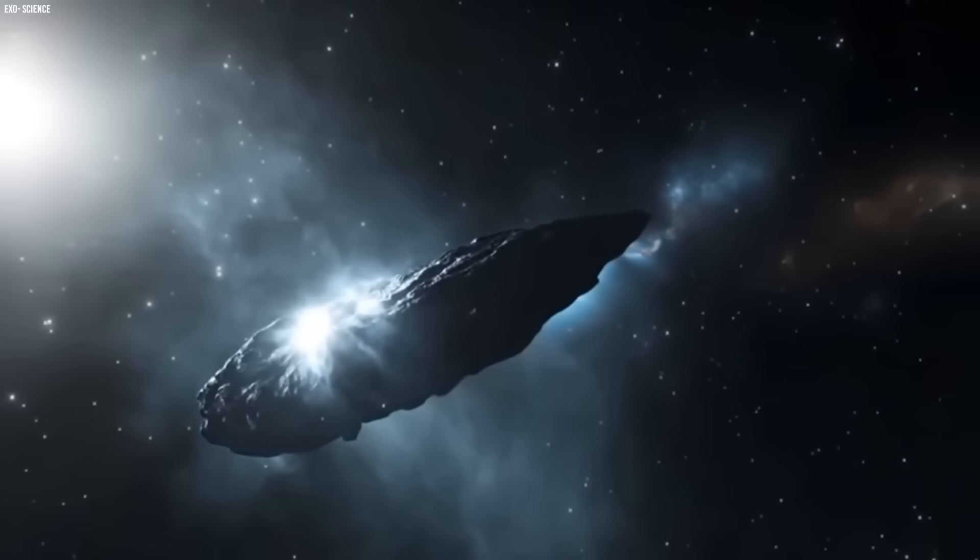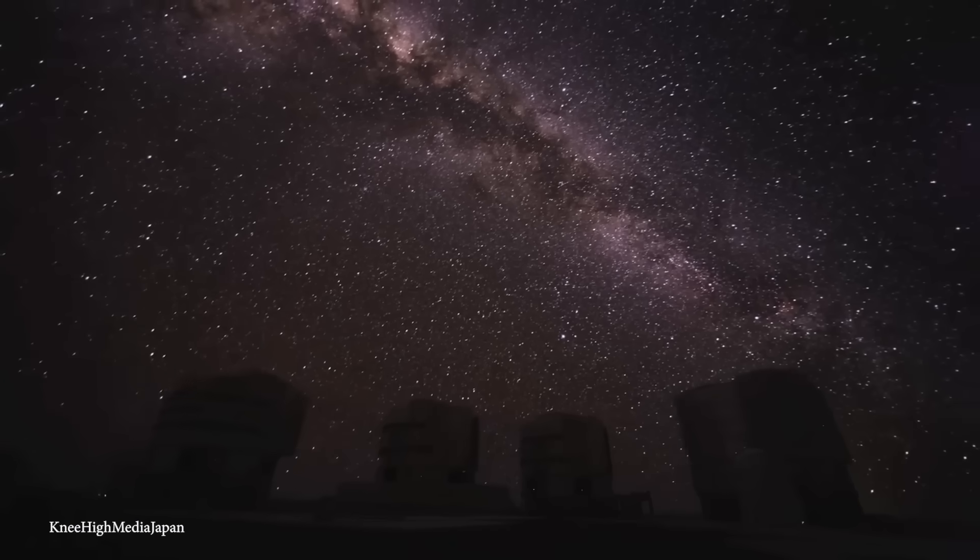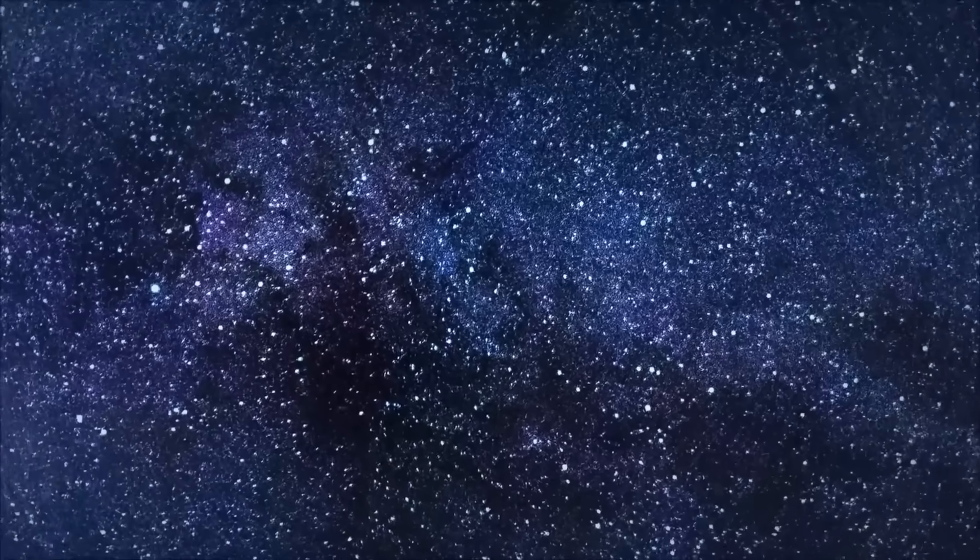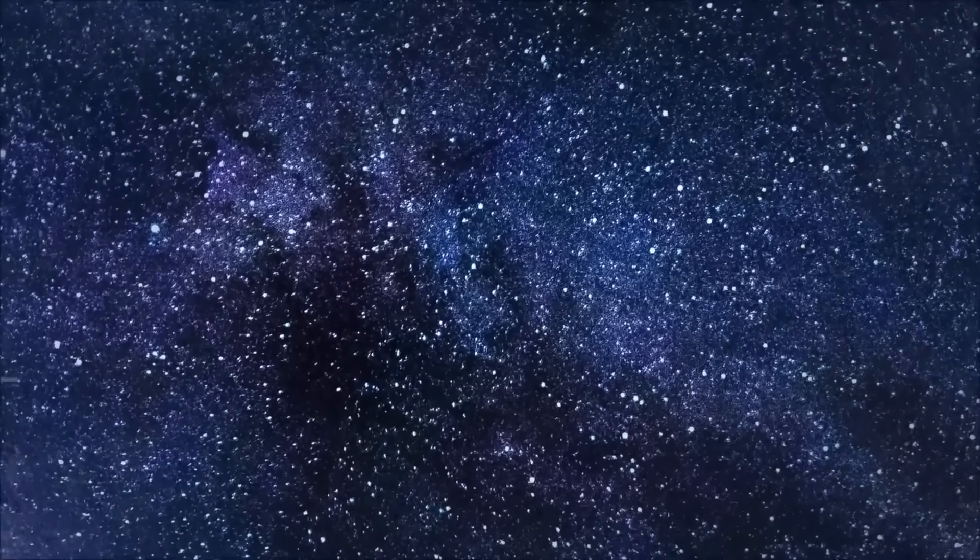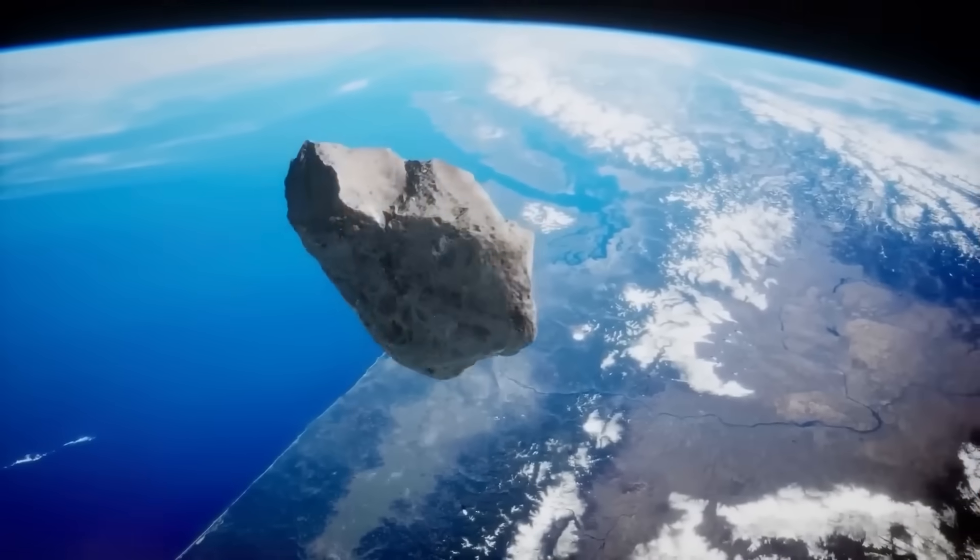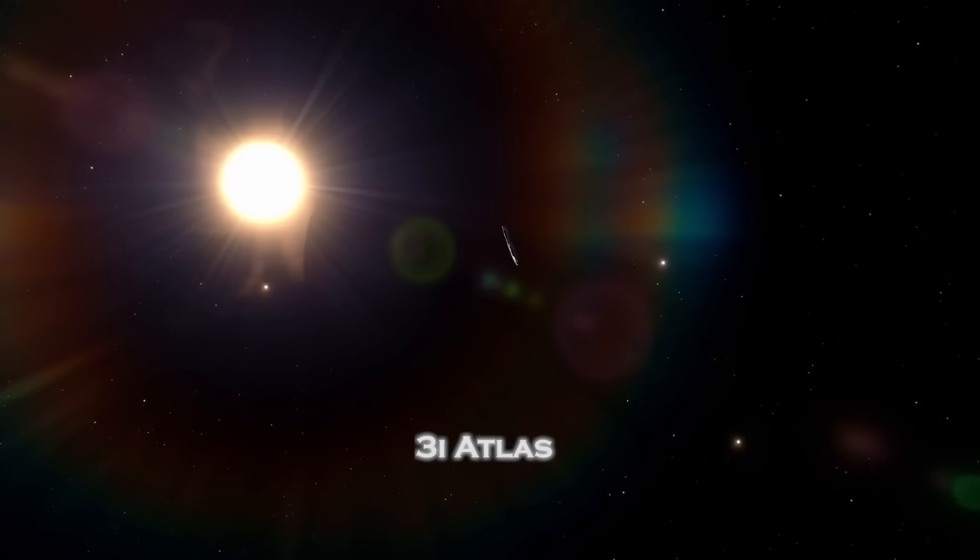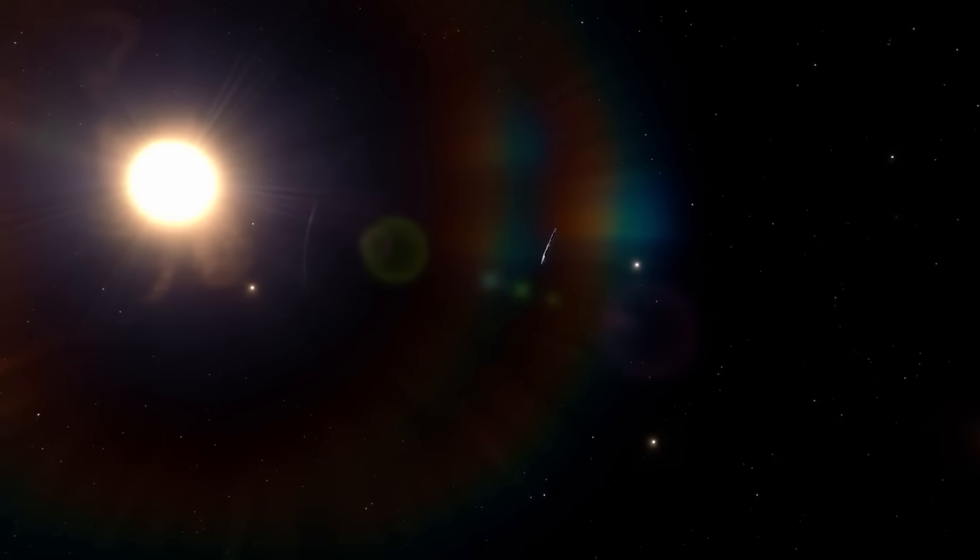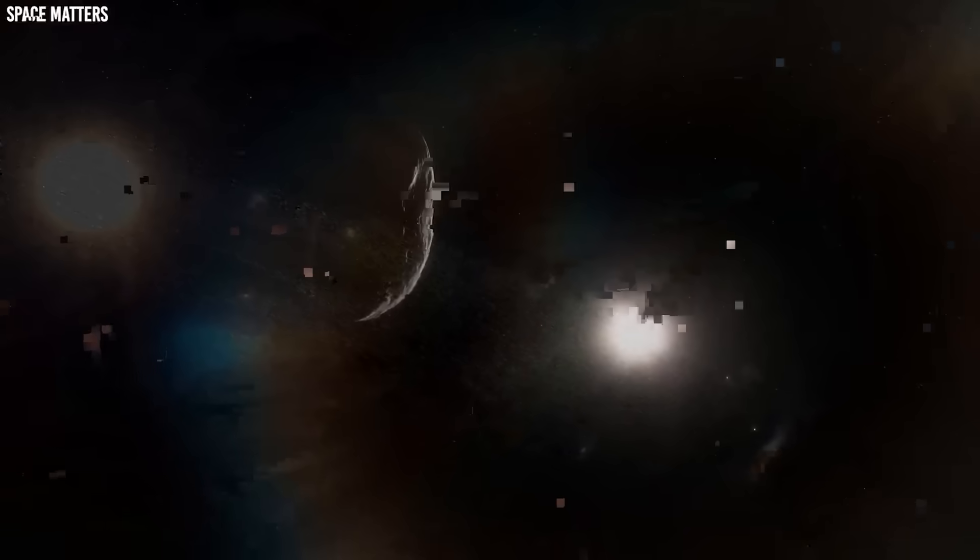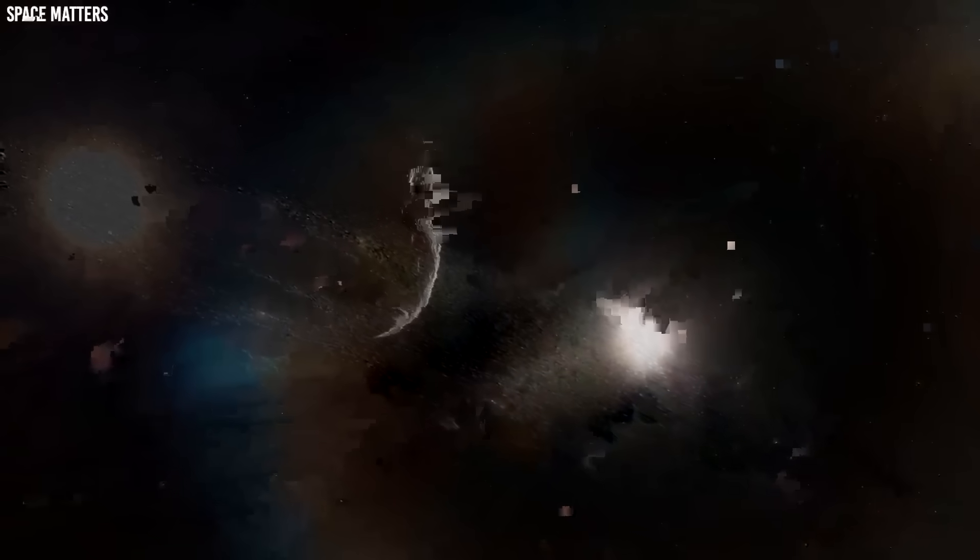As the newest images from the Virtual Telescope Project make their rounds through every lab, observatory, and online forum on Earth, one feeling hangs in the air heavier than wonder: unease. The cosmos has just given us another impossible riddle, and this time it's staring right back at us. 3i Atlas continues its journey through the solar system, cold, blue, and silent, defying every equation we've ever trusted. It doesn't behave like a comet, doesn't look like an asteroid, doesn't fit into any of the tidy boxes that human science has built to make sense of the sky.